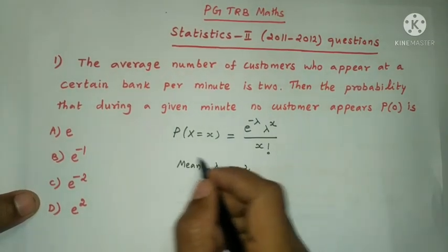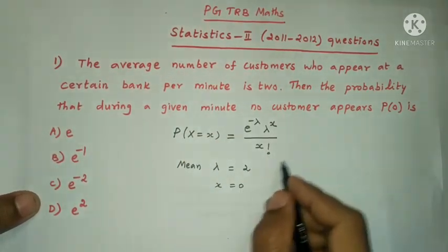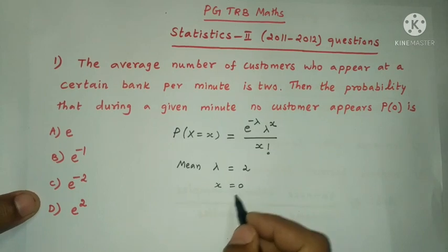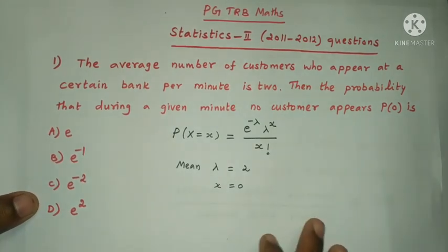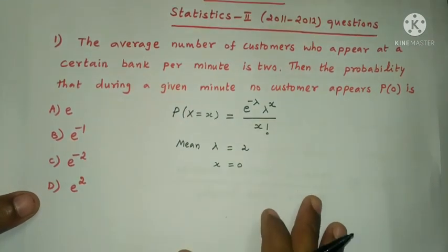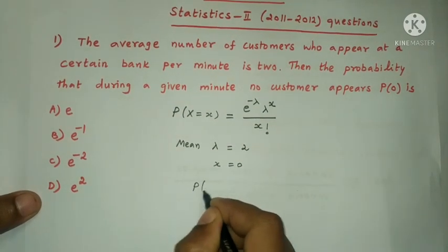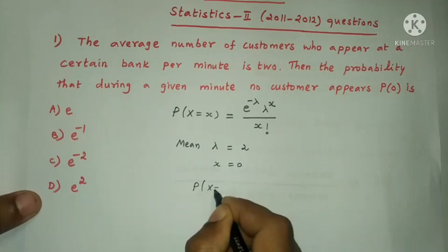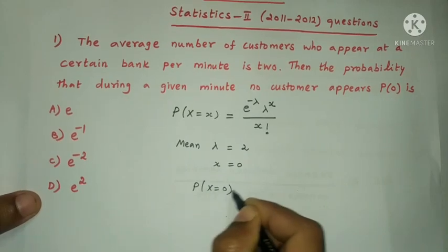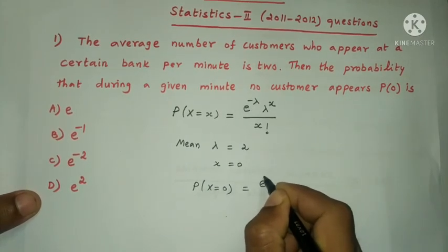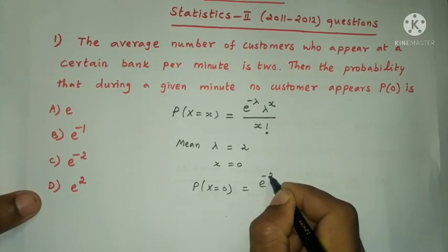So in the Poisson distribution formula, with λ = 2 and x = 0, P(X = 0) = e^(−2) × 2^0 / 0! = e^(−2).